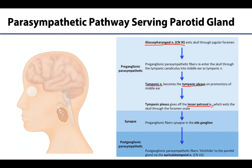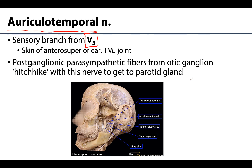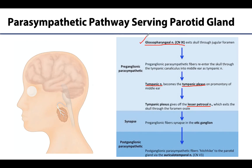If asked which nerve is the source of the preganglionic parasympathetic fibers that innervate the parotid gland, the answer is the glossopharyngeal nerve, or cranial nerve 9. And if asked which nerve allows passage of the postganglionic parasympathetic fibers to the parotid gland, the answer is the auriculotemporal nerve — though it's important to note that the auriculotemporal nerve is not itself a parasympathetic nerve. It simply allows those postganglionic fibers to travel with a larger collection of fibers on the way to the parotid gland.